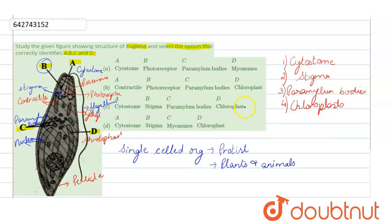We have got the four parts. According to the description, the correct option is C. A is cytostome, B is stigma, C is paramylum bodies and D is chloroplast.